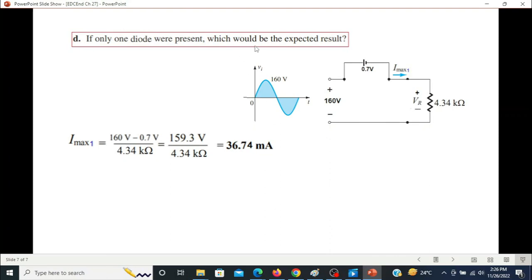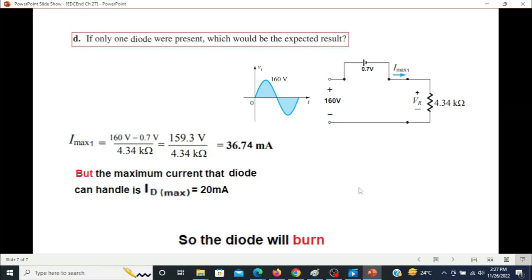Now what would be the expected result? This is important. Keep in mind that the diode current rating we calculated to be 20 milliampere. But the maximum current that the diode can handle is I_D(max) equals 20 mA. And now 36.7 milliampere current is passing. So what will happen? The diode will burn.